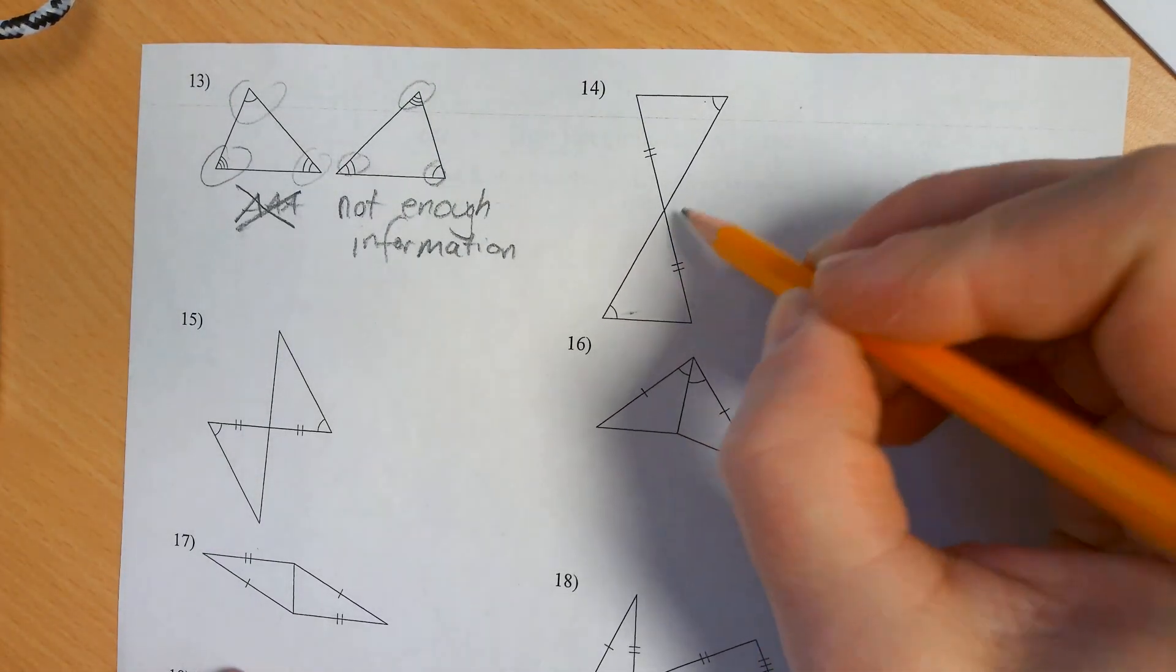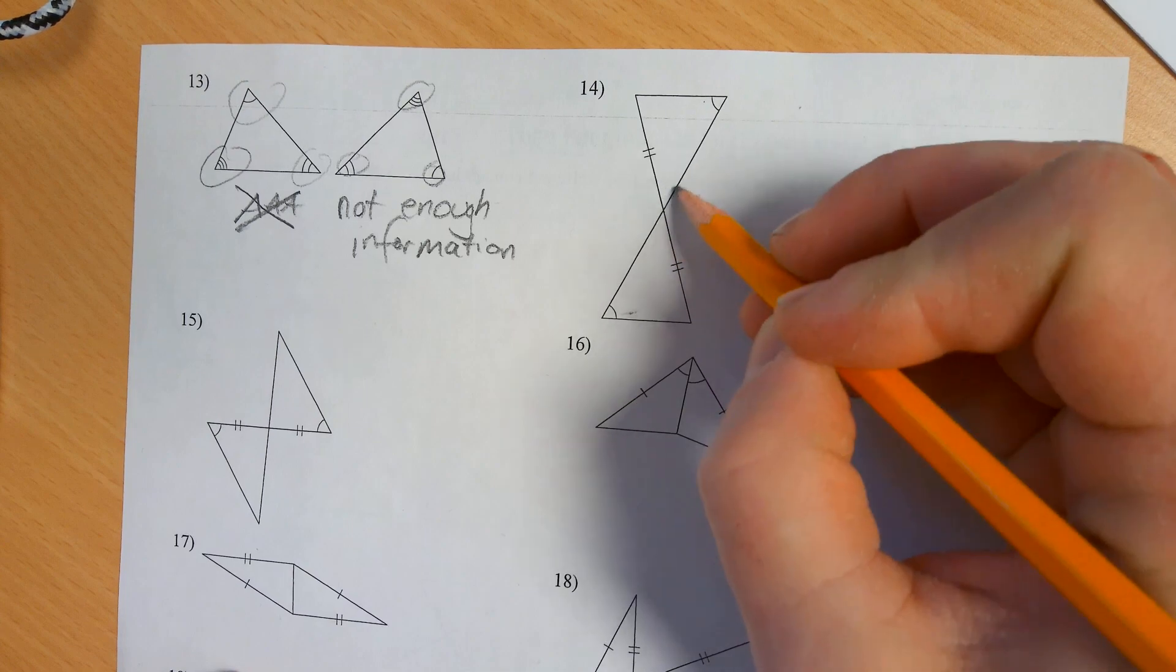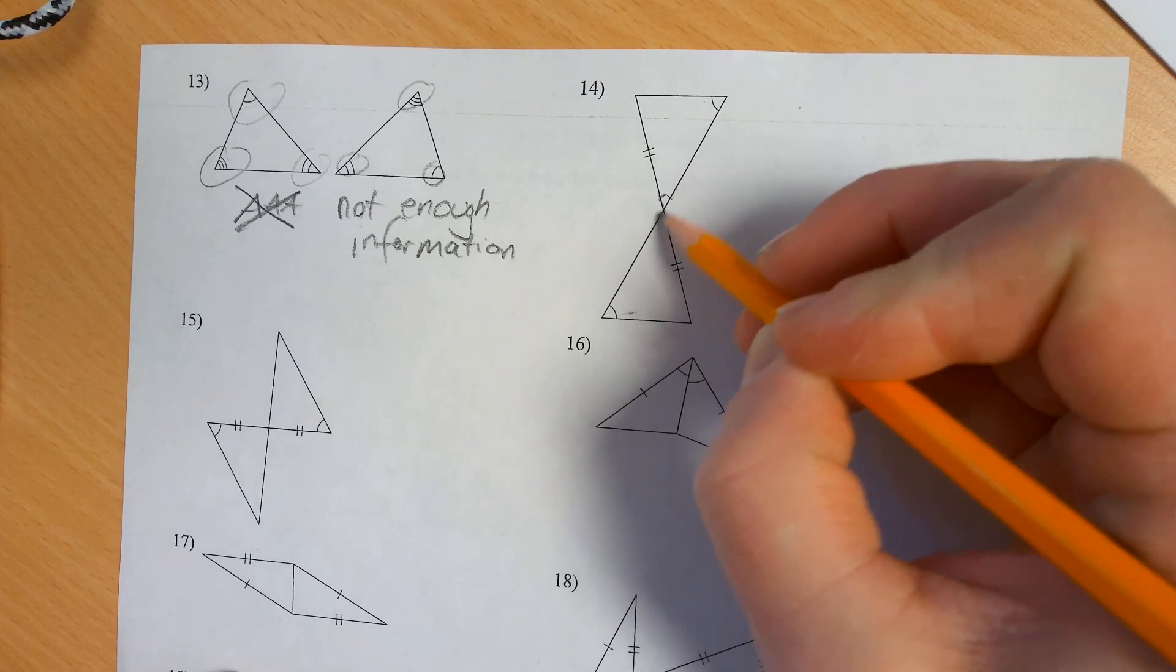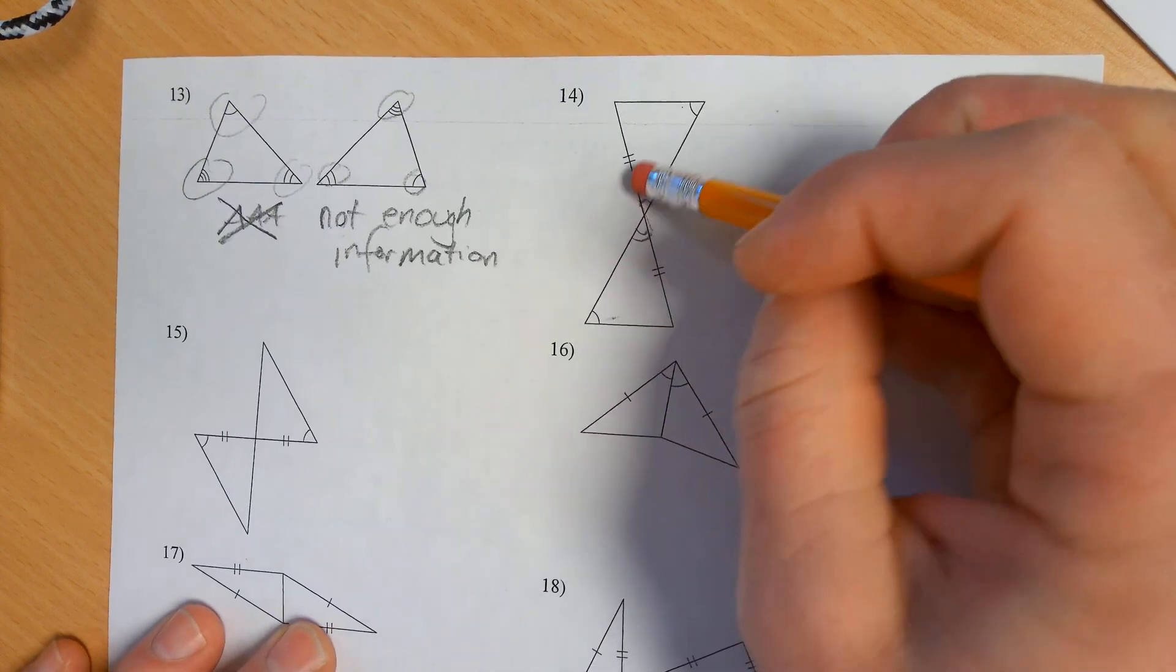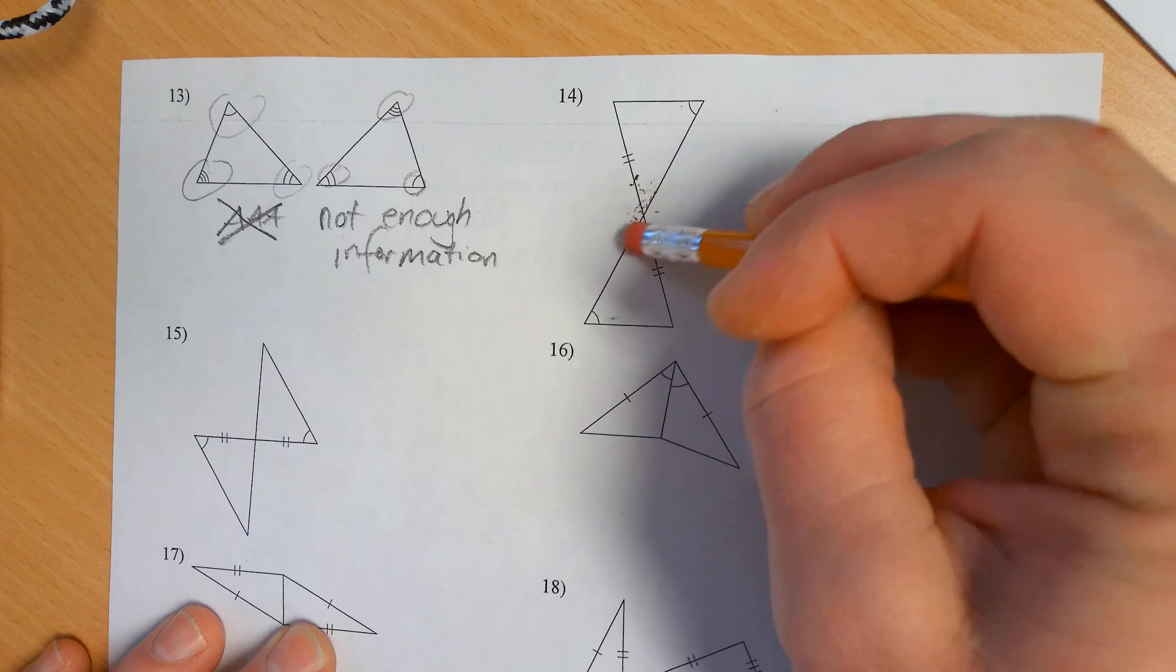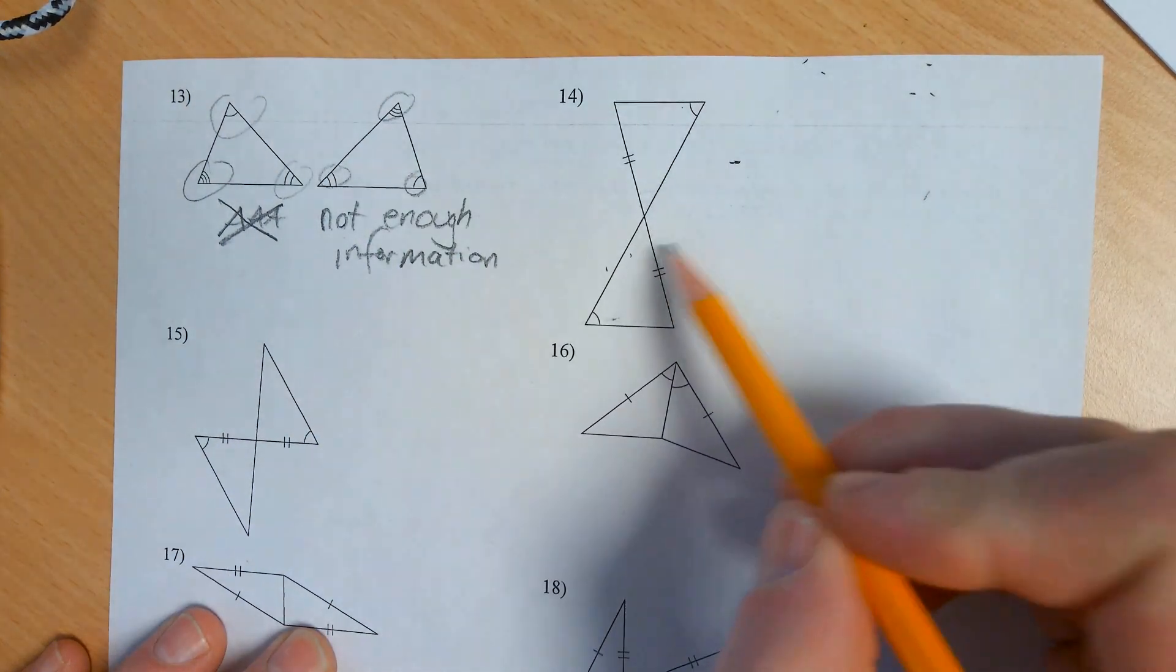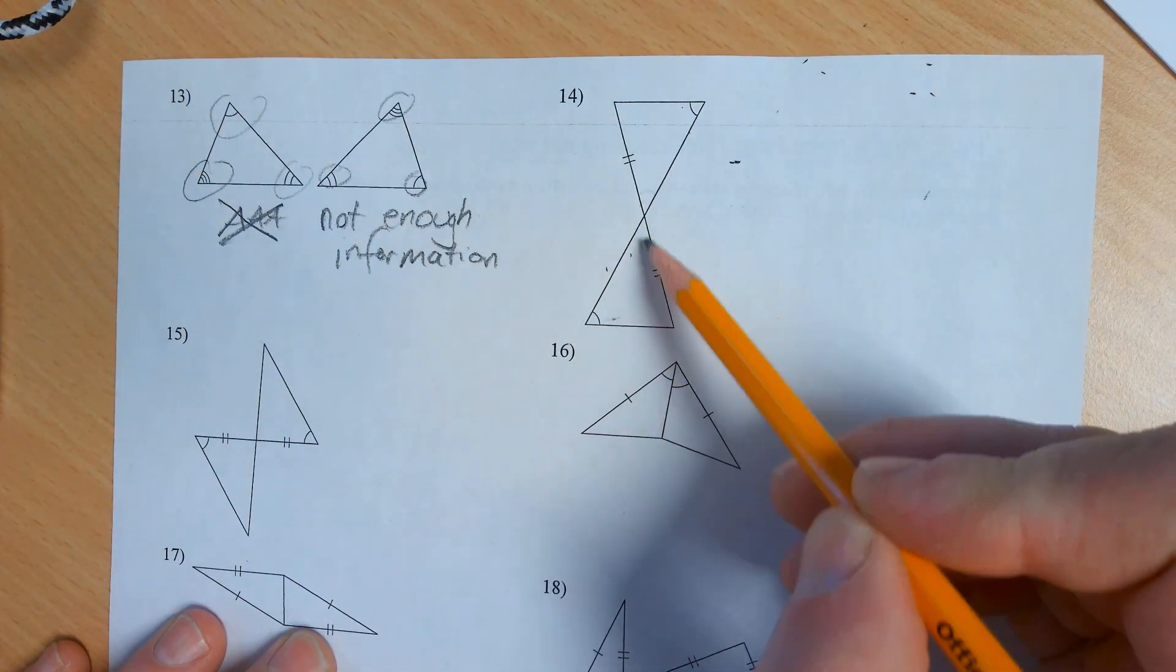Now this one has some secret information. Because wherever two lines cross, the angles are congruent. They match each other. So on the computer screen you can't write on it. I guess you could take some scratch paper and redraw the whole thing. Or you can just say, okay I know this angle.